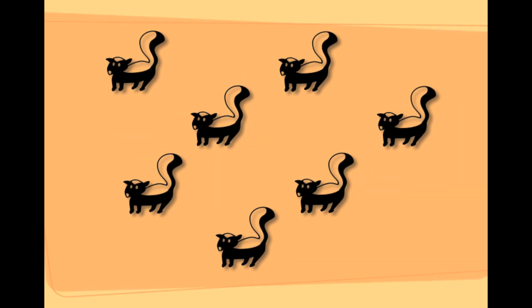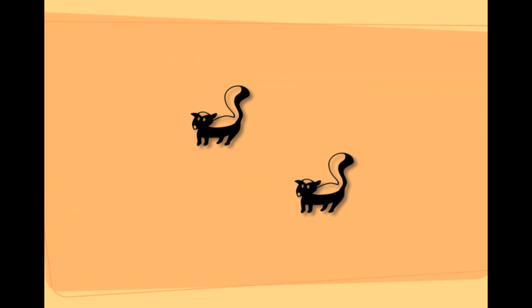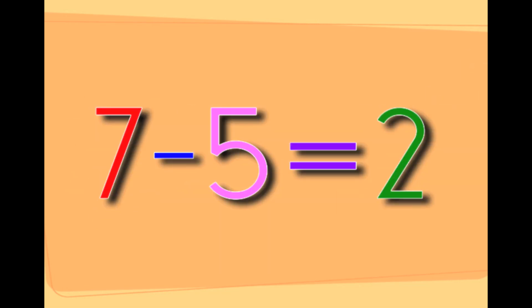This is seven skunks. Taking five skunks away from the seven skunks leaves you with two skunks. Seven minus five equals two.